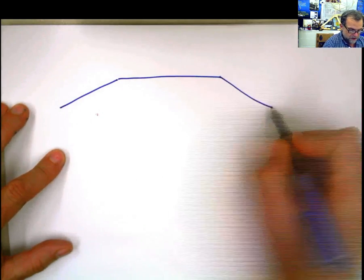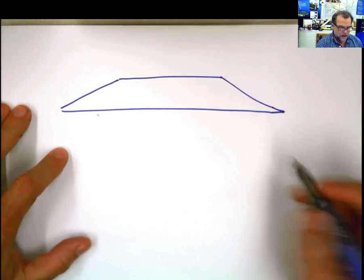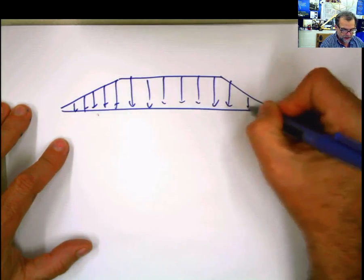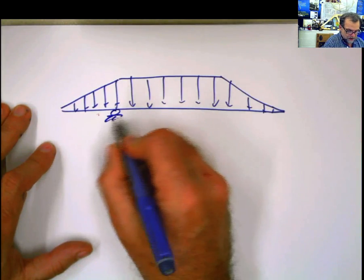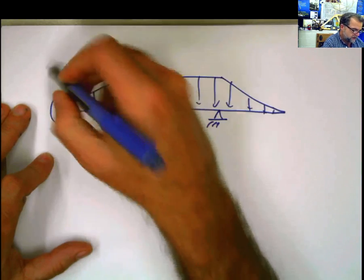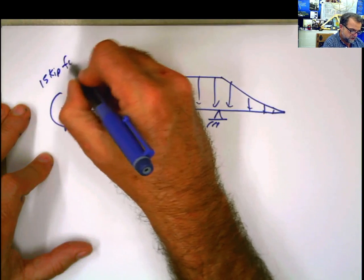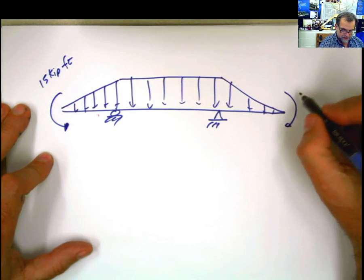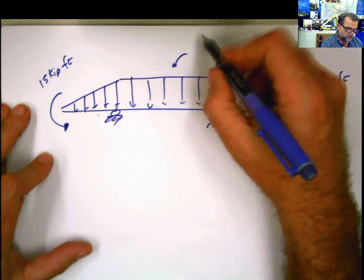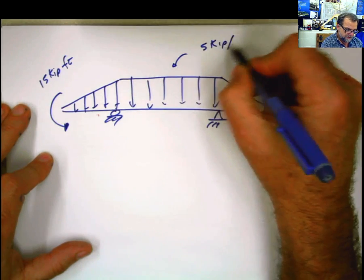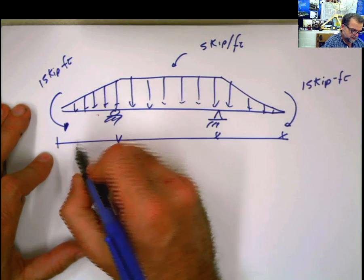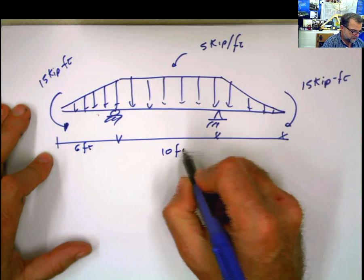The problem is something that practically is from the book. You have a triangular force here, a rectangular force, and another triangular force. You have a roller support and then a pin support on this end. You have a concentrated moment applied at this end of 15 kip-feet, and another concentrated moment at this end, also 15 kip-feet. The height of this distributed load is 5 kips per foot. Distances are 6 feet, 10 feet, and 6 feet.